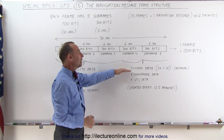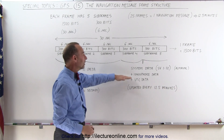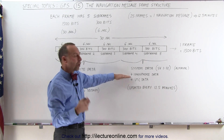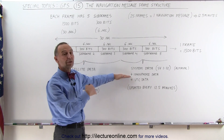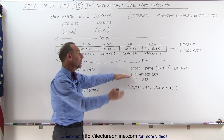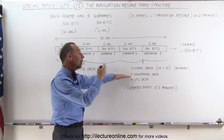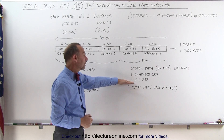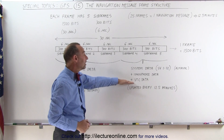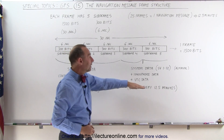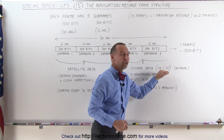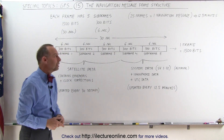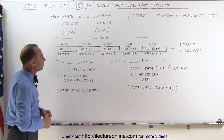This data can be a little bit more outdated. The ionosphere doesn't change as quickly — this is based on an ionospheric model — but that data does get updated every 12 and a half minutes: the clock data, the UTC data, and the almanac of all the space vehicles, which doesn't need to be updated nearly as often.